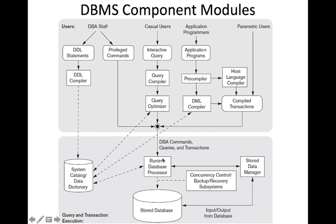Another type of user is the application programmer. They write programs in programming languages, embedding DML commands inside the application programs. When such programs need to be executed in the DBMS, the DBMS performs a pre-compilation of the application program. The pre-compiler separates all DML commands — such as select, insert, and delete — from the application program and passes them to the DML compiler.